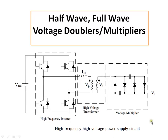In this video I am going to discuss about half wave and full wave voltage doublers and other voltage multipliers. This circuit shows the application of the voltage multiplier in the generation of high DC voltage — this is basically a DC to DC switched-mode power supply which converts low voltage DC to high voltage DC.